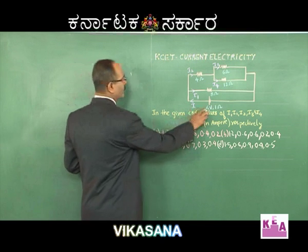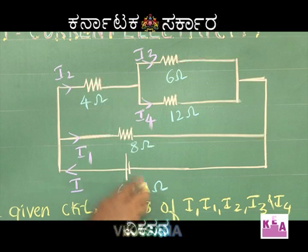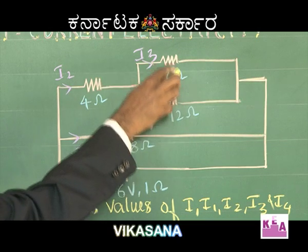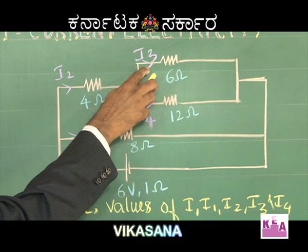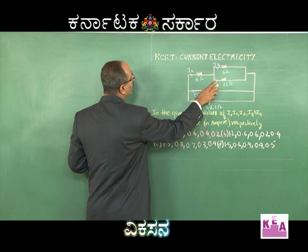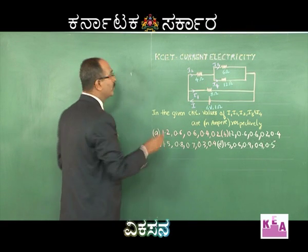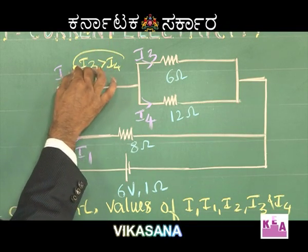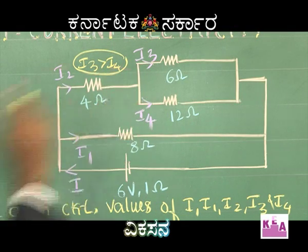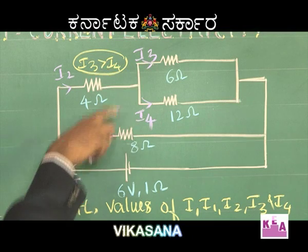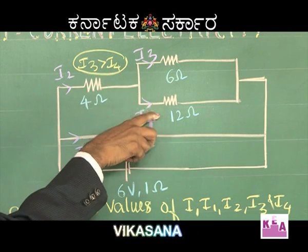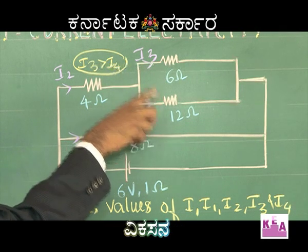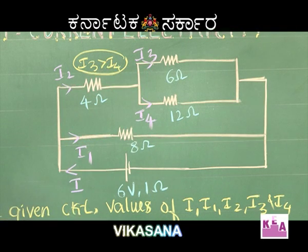Look at this — we have 6 ohm, 6 ohm, 8, 6, and 12. Can you say something about I3 and I4? I3 is definitely greater than I4. The reason is you have less resistance and more resistance here. To what extent? I3 is double I4 because the resistance ratio is 1 is to 2, so the current ratio should be 2 is to 1. With this logic, let us try to eliminate a few answers.